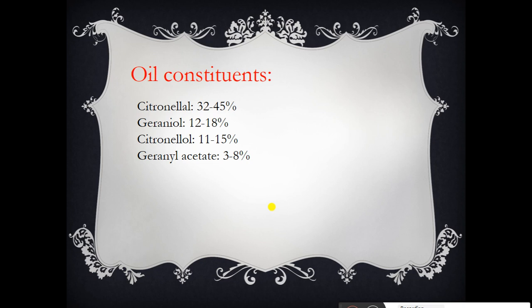The oil constituents of citronella oil are: citronellal 32 to 45%, geraniol 12 to 18%, citronellol 11 to 15%, and geranyl acetate 3 to 8%.